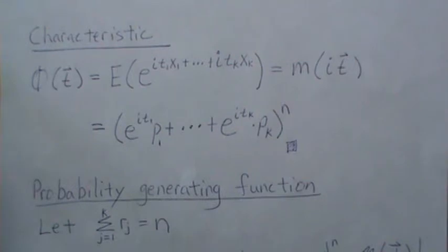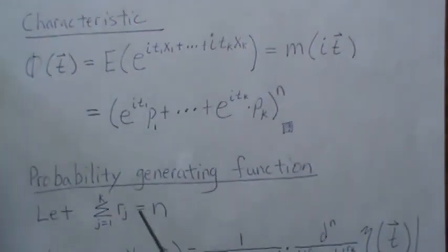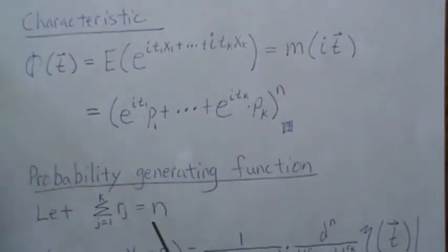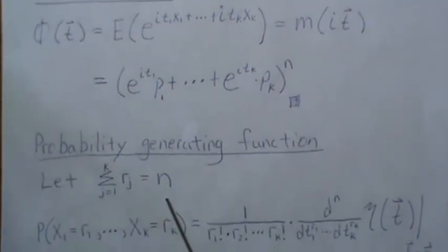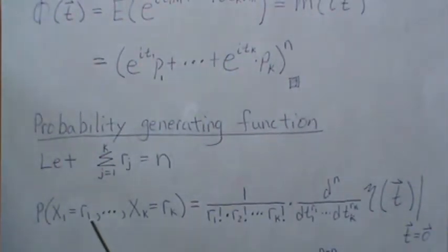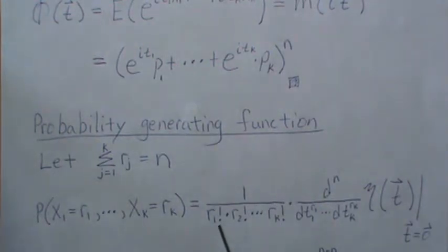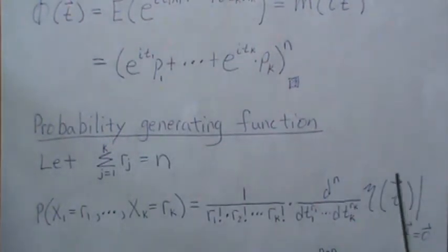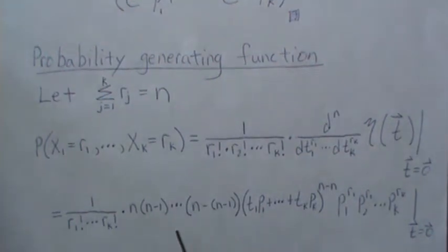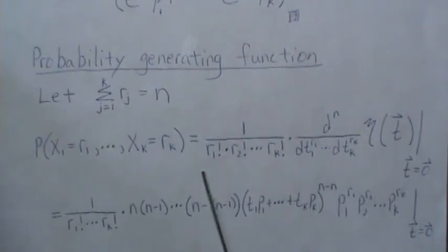And then we can also derive a probability-generating function. So we let the sum of the rj's must equal n. When we're calculating the factorial moments or the falling factorial moments, it didn't have to equal n. But when we're calculating the probability-generating function, it must equal n. So the probability that x1 is r1 through xk is rk—those have to add to 1. That says divide each by their respective factorials, take the nth derivative, nth partial with respect to t1 r1 times and tk rk times of our factorial moment-generating function evaluated at 0 instead of 1.